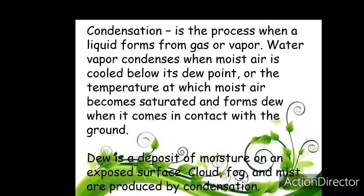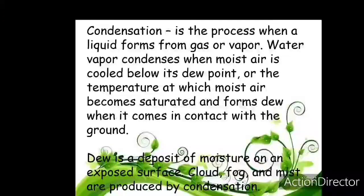What is condensation? In the water cycle, when water vapor rises up and forms clouds, and those clouds meet the cold air high in the sky, they come down and form water droplets — this is rain. Water vapor condenses when moisture is cooled below its dew point, the temperature at which moisture becomes saturated. Dew is a deposit of moisture — during winter you see water droplets collecting on leaves. Clouds, fog, and mist are all produced by condensation.